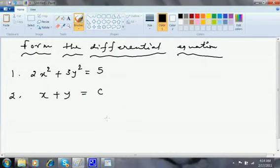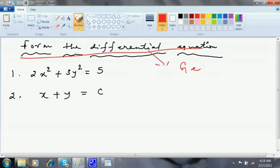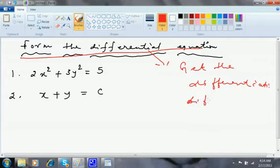A question comes like this: Form the differential equation. 2x² + 3y² = 5. Form the differential equation. This means get the differentiation, or differentiate. That's it. He is telling you to differentiate this or to get dy/dx.